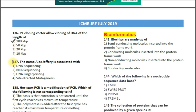Question number 137: The name Alec Jeffreys is associated with — option 1: DNA sequencing; option 2: RNA sequencing; option 3: DNA fingerprinting; option 4: site-directed mutagenesis. The correct answer is option 3 — DNA fingerprinting.